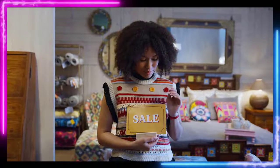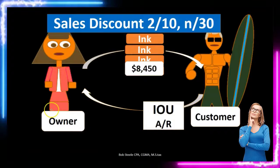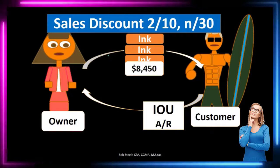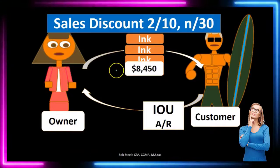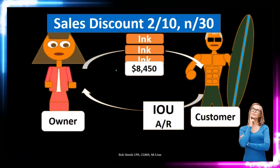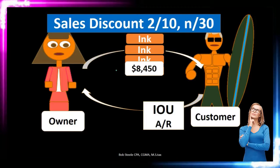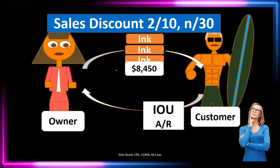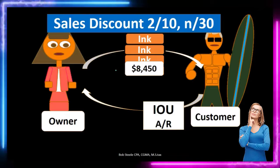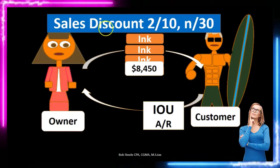Let's take a look at an example. We are the owner here on the left-hand side making a sale of our inventory to a customer. In this case, we're selling at a sales price of $8,450. That's going to be the sales price of the items that we are selling. We're receiving not cash at this point, but an IOU.